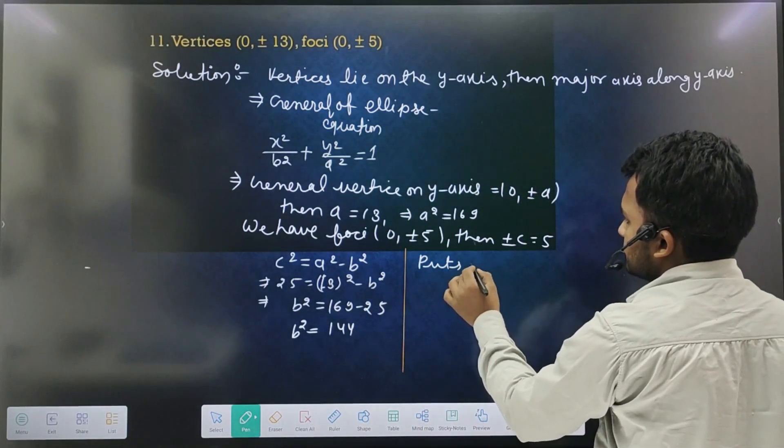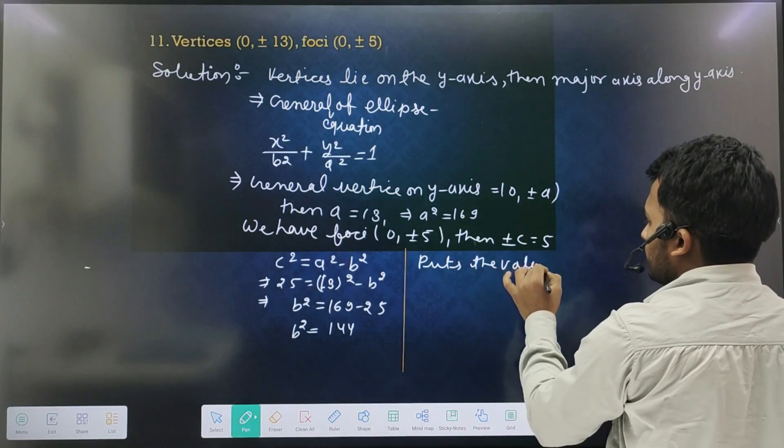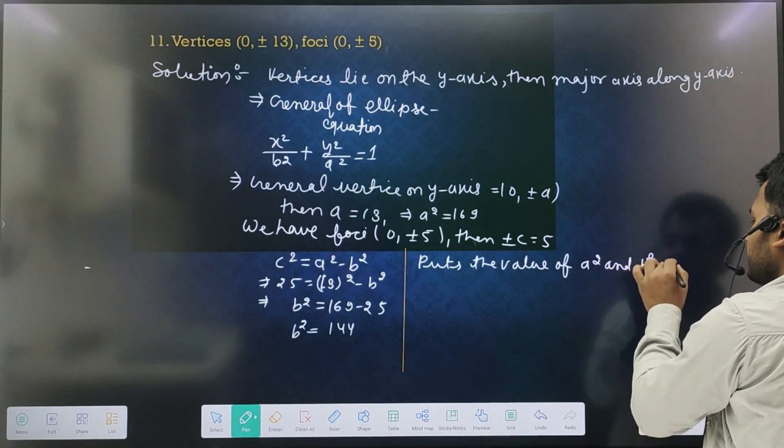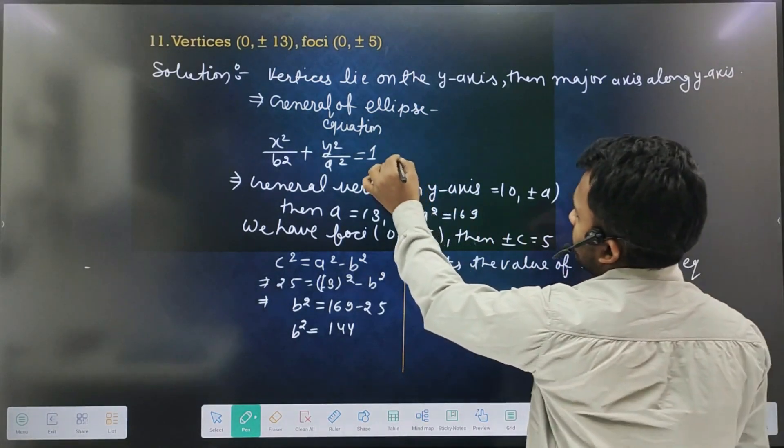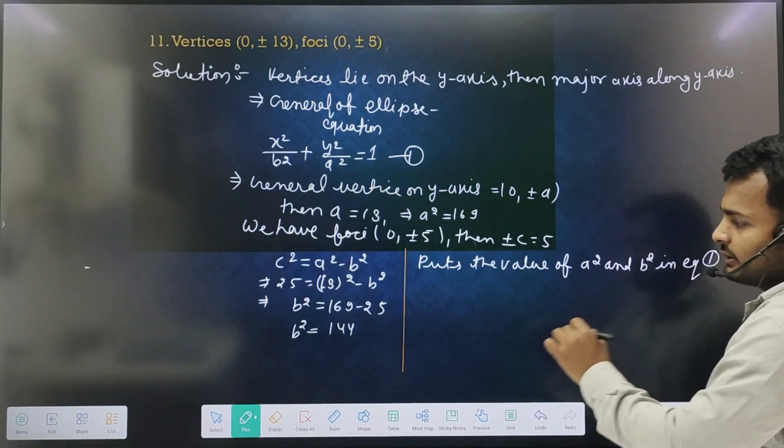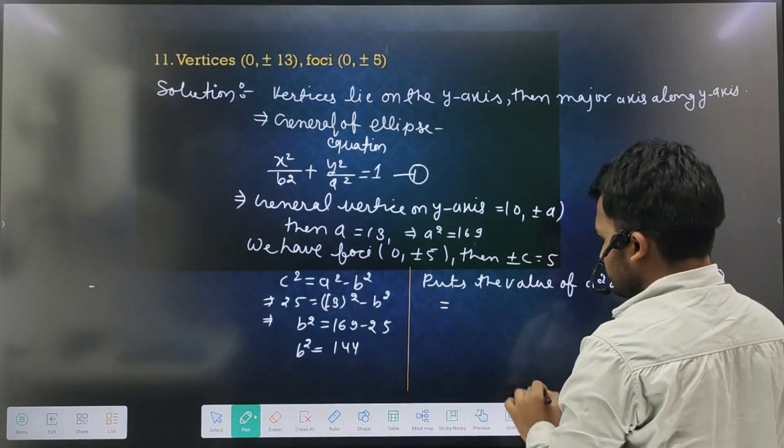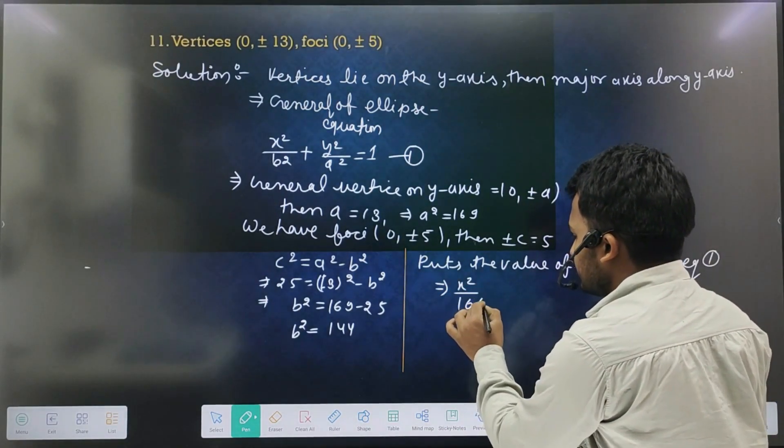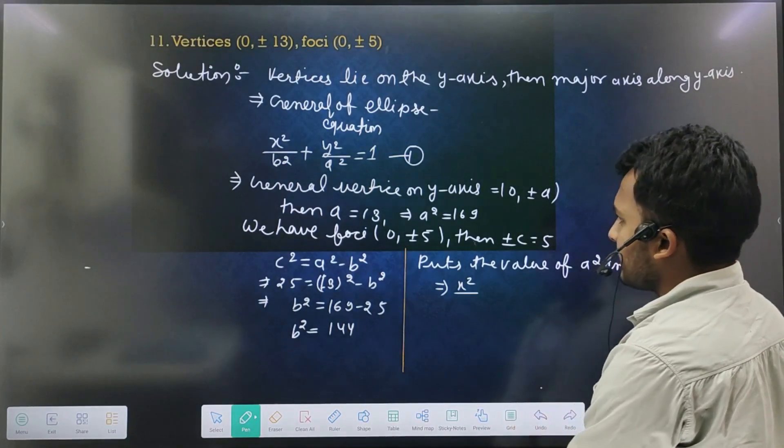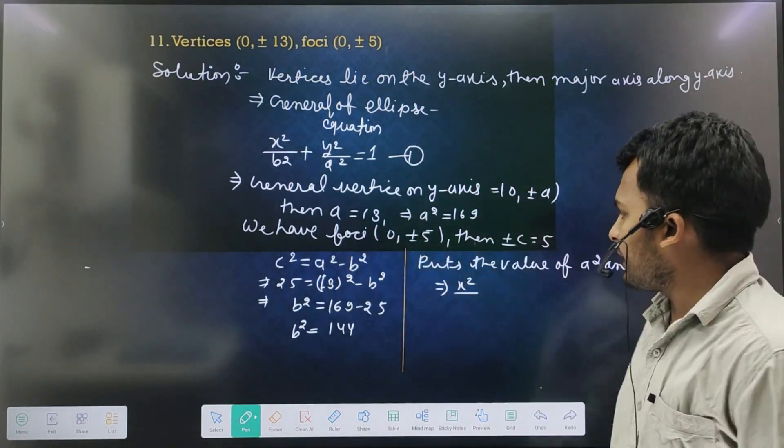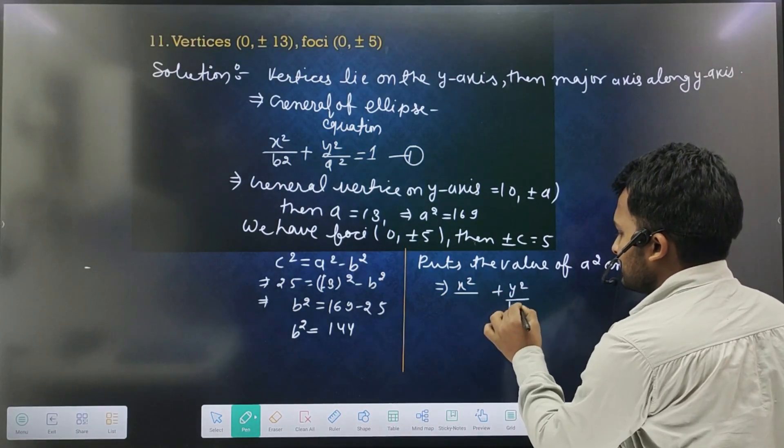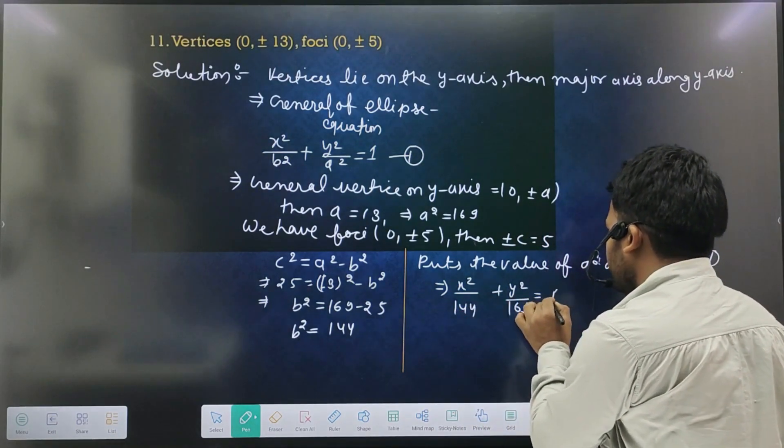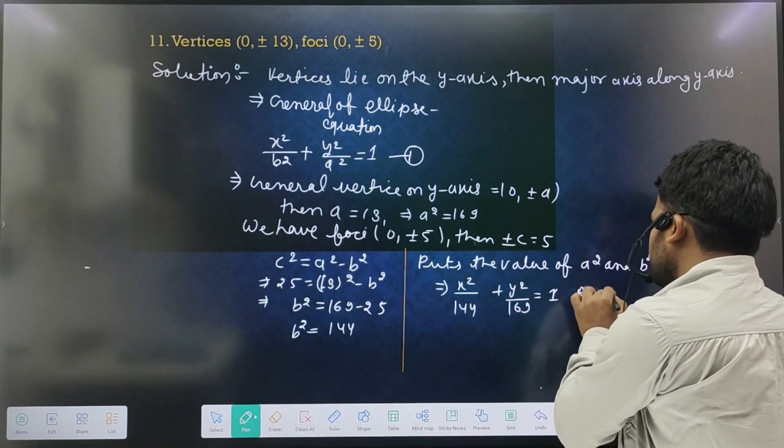Put the value of a² and b² in equation first. x² over 144 plus y² over 169 equal to 1. That's the answer.